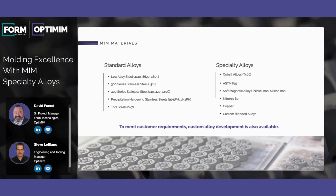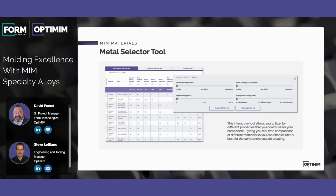We encourage you to inquire if you have a specialty application that's in need of special properties that maybe only a custom material can provide. I also wanted to mention the metal selector tool available on OptiMIM's website. This tool allows you to enter the mechanical properties that you require, and it will list the materials that can provide those properties. You can also search by materials and look at other properties — it's a really good tool when you're wanting to zero in on the best material for an application.